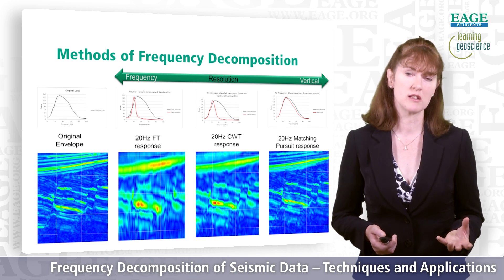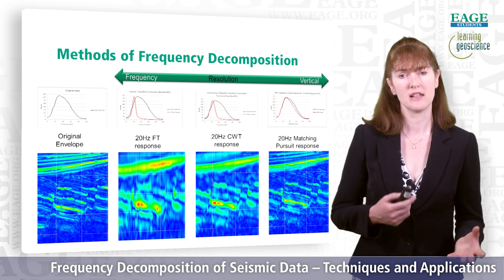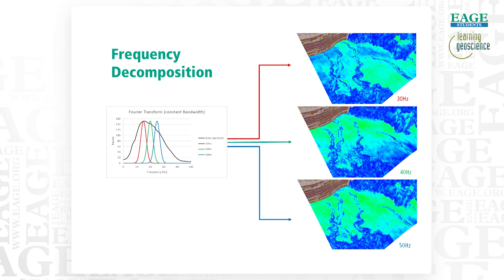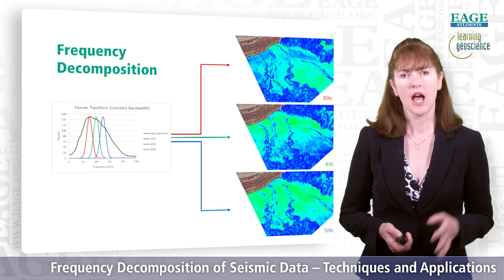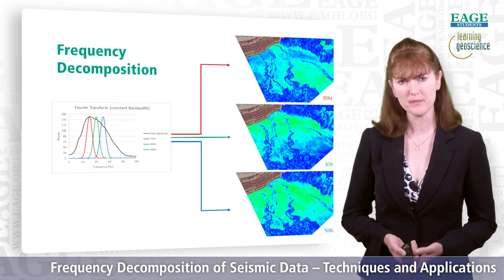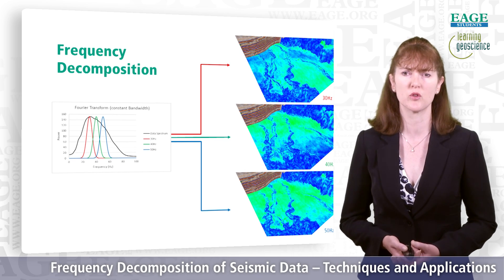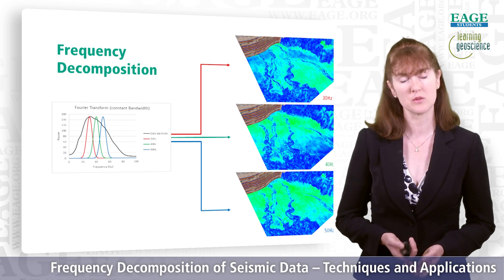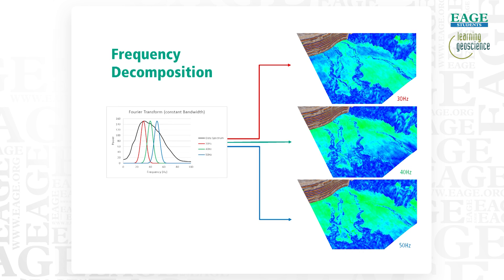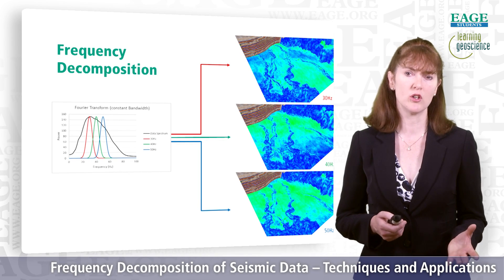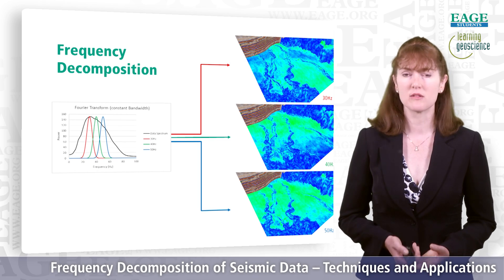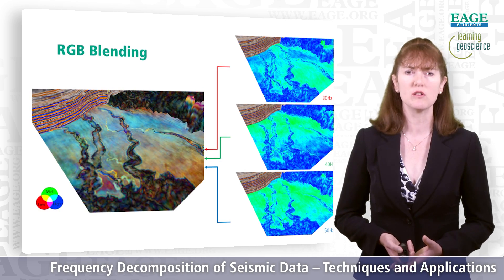So depending on whether frequency resolution or vertical localization is important, you use the appropriate technique for your interpretation objectives. When we do frequency decomposition, we usually decompose into multiple bands — not just one — and we can look at the differences between the different frequency bands to reveal different parts of the information. Here we have three frequency responses at 30 Hz, 40 Hz, and 50 Hz, showing subtle differences between them. They all come from the same input data but look at different parts of the frequency spectrum. If we view them individually we have to compare them to see how images are changing, which can be time-consuming — so it's much easier to combine them into one volume using RGB blends.